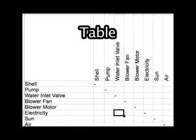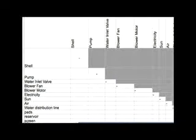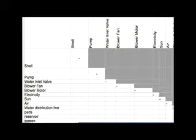Open up an Excel document and label all the components in both the rows and the columns. Here's a small portion of the table that I put together for the evaporative cooler as an example. Because the table is symmetrical about the diagonal, you can ignore the top or grayed out portion of the table for now.